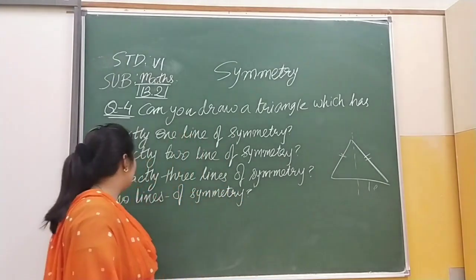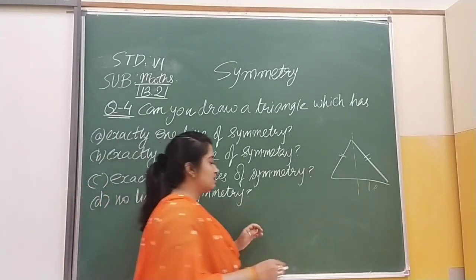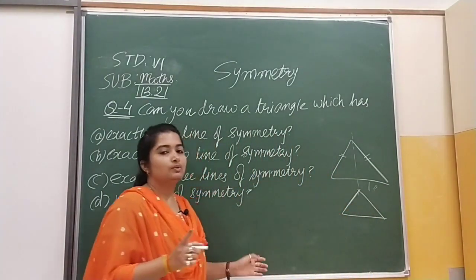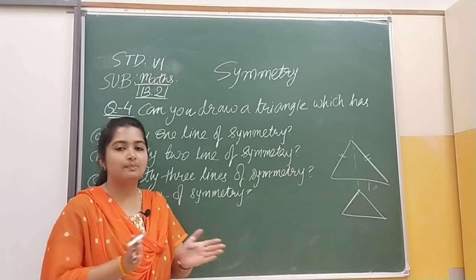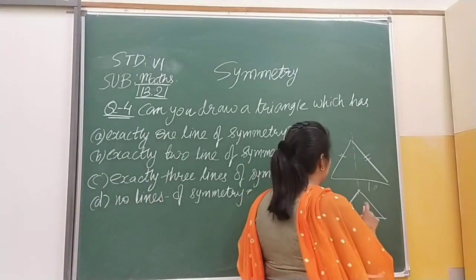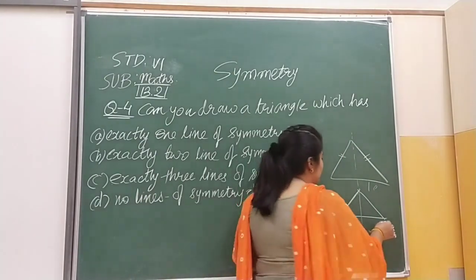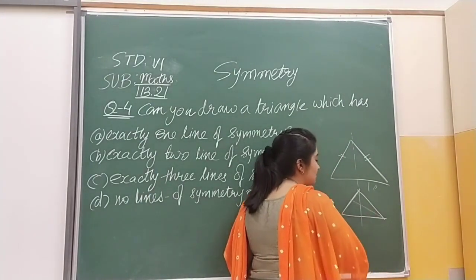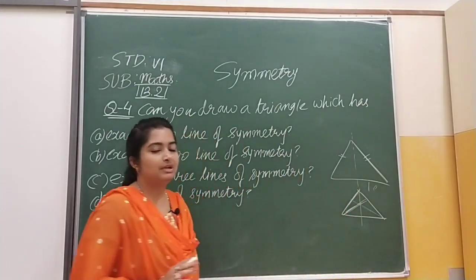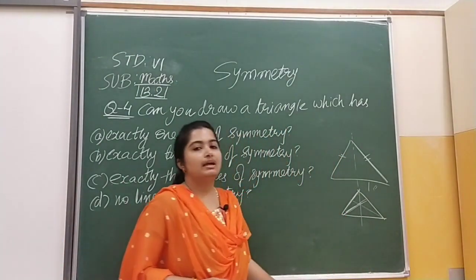Then we have given exactly three lines of symmetry. When we are talking about a regular triangle, matlab equilateral triangle ki jab hum baat kar rahe hain, jiski tino sides same hain — toh usko hum kisi bhi angle se turn karenge, kisi bhi angle se bend karenge, toh we will get the same shape, matlab humhe exactly same hi milega. For suppose we are bending from here, toh bhi humhe same hi shape milegi. Jab hum equilateral triangle ki baat karte hain, we can get three lines of symmetry.